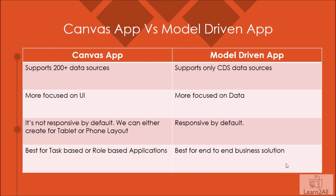Canvas app is not responsive by default — you create either a tablet or phone layout, though you can make fields responsive, which is time-consuming. Model-driven apps are responsive by default. Canvas apps are best for task-based or role-based applications like a customer feedback or Azure form application, while model-driven apps are best for end-to-end business solutions like a customer complaint management system.